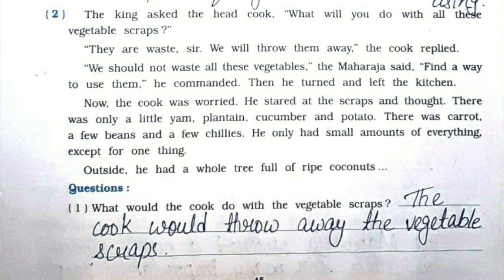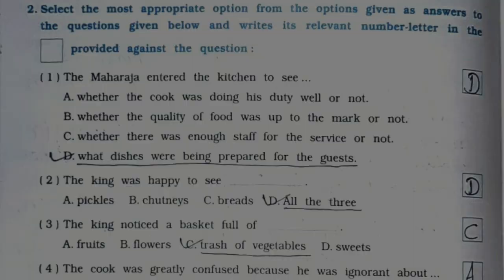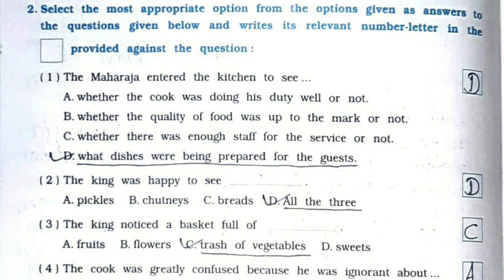Now second paragraph question answers. First one: What would the cook do with the vegetable scraps? The cook would throw away the vegetable scraps. Second: What did the Maharaja suggest the cook to do with the scraps? The Maharaja suggested the cook to find a way to use the scraps. Third: Why was the cook worried? The cook was worried because he could not think what to do with the vegetable scraps.